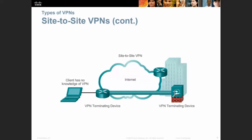Here we have a site-to-site VPN. You have your VPN terminating device and the site-to-site VPN connection from one network to another. For the client, it is transparent — the client doesn't care or even know how the traffic is going. It just knows it will receive a response and can access the other network.